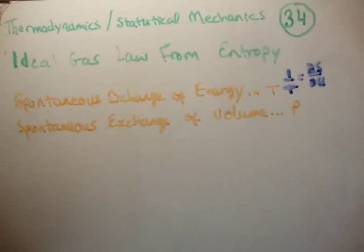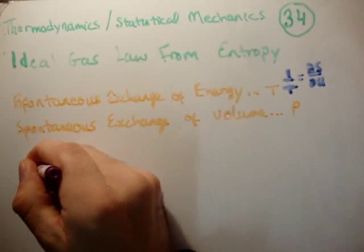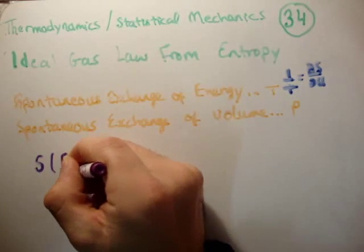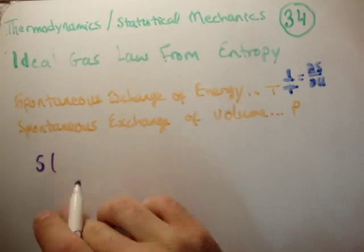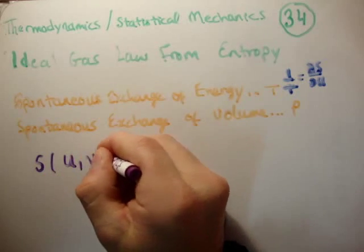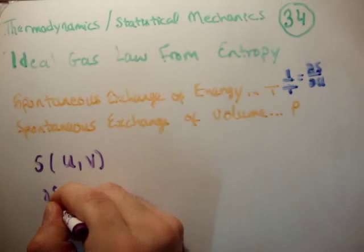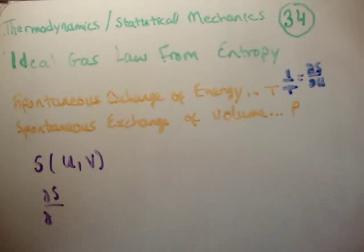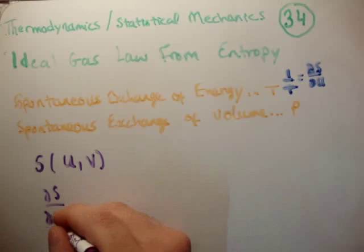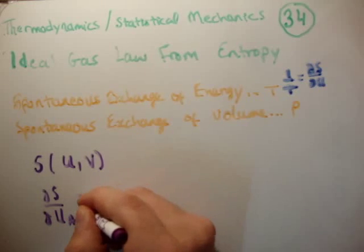If our system can exchange both energy and volume, that means the entropy is a function of both energy and volume. I'm going to use U and V. When is this in equilibrium? It's in equilibrium when it's no longer changing. That means del S, let's take two systems A and B, and let's look at del S del U sub A. Well, we know that's equal to zero.